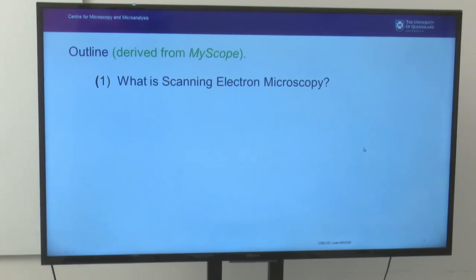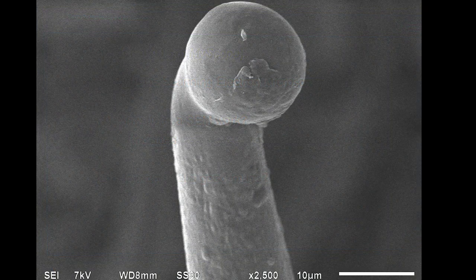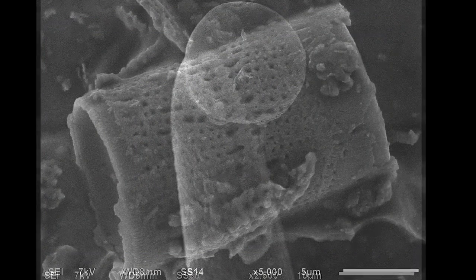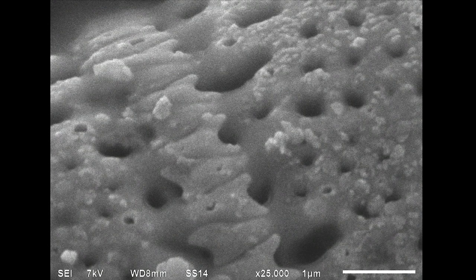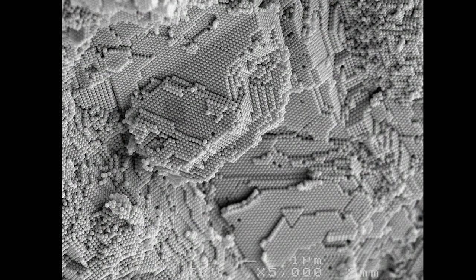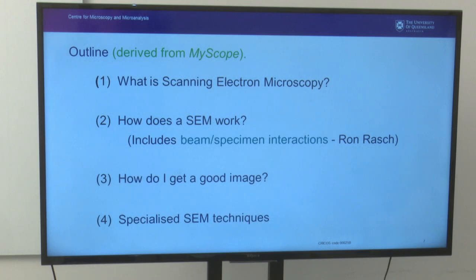This PowerPoint talk is derived from the latest version of MyScope. The first topic covered is what is scanning electron microscopy; second, how does an SEM work; third, how to get a good image — which requires knowing enough about SEM operation to image different samples in different situations. The last section covers specialized SEM techniques — the non-conventional, high-end techniques — which we'll address towards the end.